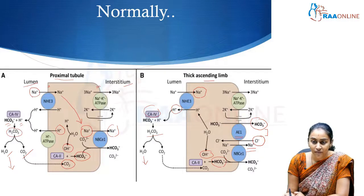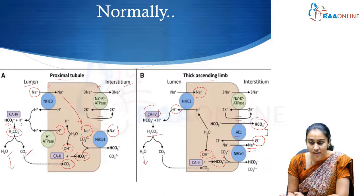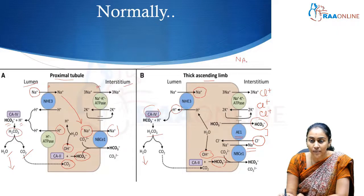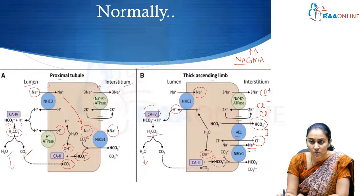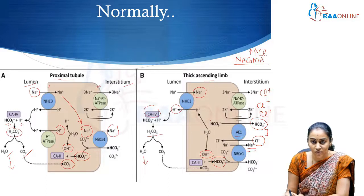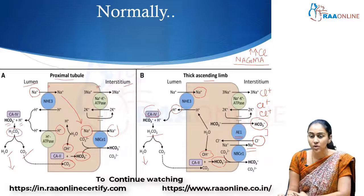If this whole process is impaired — if the cell is not getting enough bicarbonate — the anion exchanger is not able to push out bicarbonate and therefore not able to pull in chloride. As a result, there is chloride build-up in the interstitium. This is why renal tubular acidosis is not only an important cause of normal anion gap metabolic acidosis, but also causes hyperchloremia — making it a hyperchloremic normal anion gap metabolic acidosis.